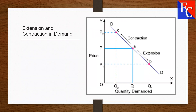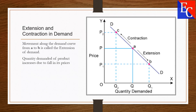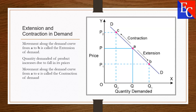This figure shows the Extension and Contraction of Demand. Movement along the demand curve from A to B is called the Extension of Demand — quantity demanded increases due to a fall in price. Movement along the demand curve from A to C is called the Contraction of Demand — quantity demanded decreases due to a rise in price.